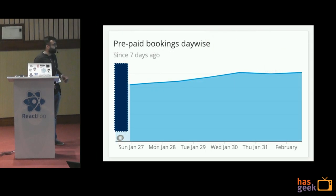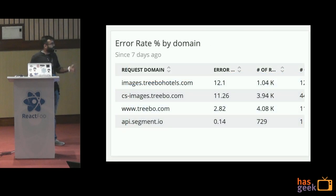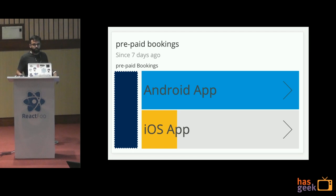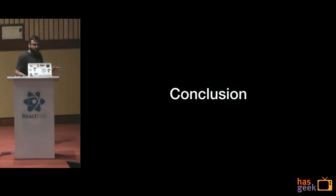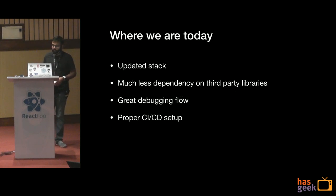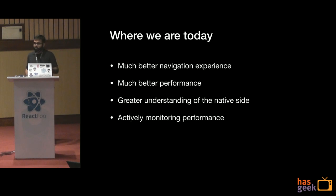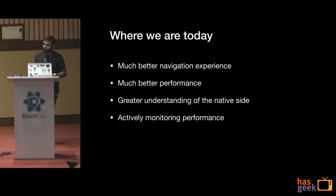We also track prepaid bookings by device, error rate by domain — for example, API crashes and 500 errors — and prepaid bookings by app version. Since this directly comes from Segment, I can even track the iOS app here. In conclusion: we have an updated stack, much less dependency on third-party libraries, a great debugging flow, proper CI/CD setup, automated regression testing, a codebase thriving in the monorepo, a great component library in Leaf UI, easy-to-read components, much better navigation experience, better app performance, greater understanding of the native side, and we now actively monitor performance. But we still have a long way to go.